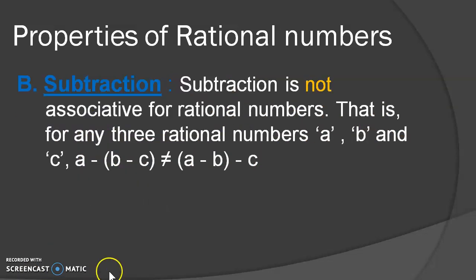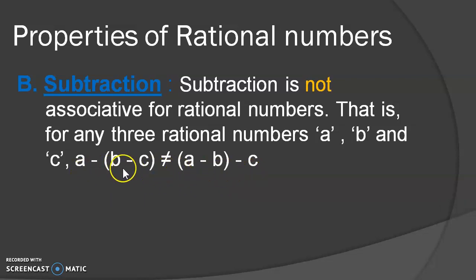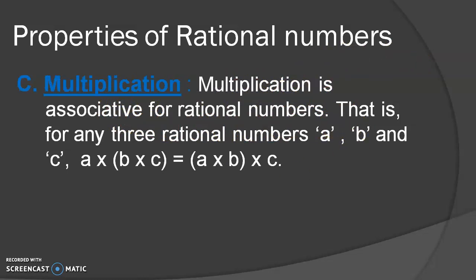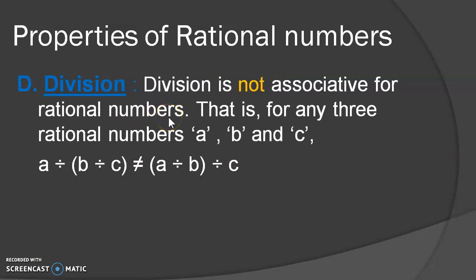Next is subtraction. This is not the case with subtraction — we cannot get the same result by grouping the numbers in a different way. You can see it on the screen. Take some example and try to solve it. Hence, subtraction is not associative for rational numbers. Just like addition, multiplication is associative for rational numbers. That is, if A is multiplied with the product of B and C, or the product of A and B is multiplied by C, the result will be the same in both cases. Unlike multiplication, division is not associative for rational numbers.